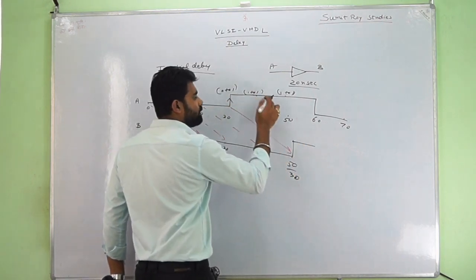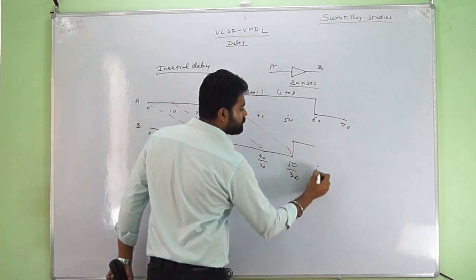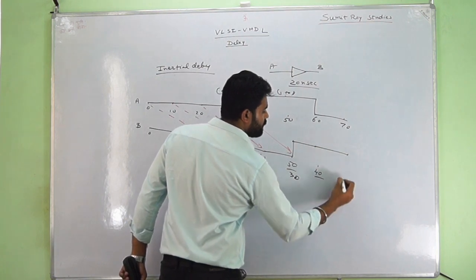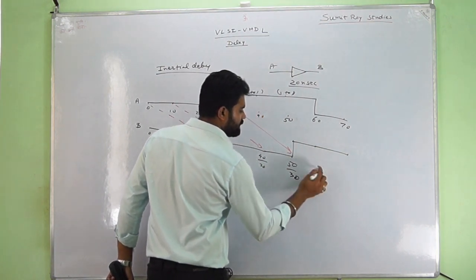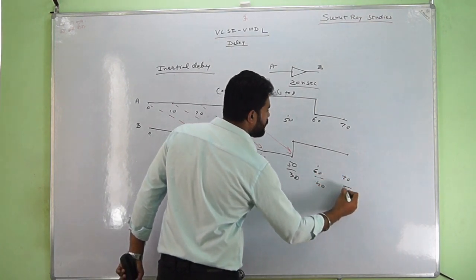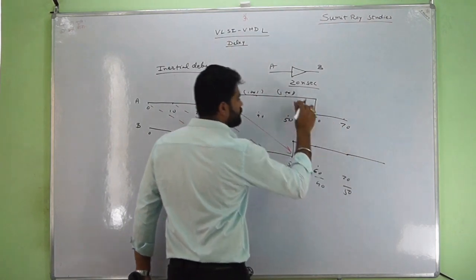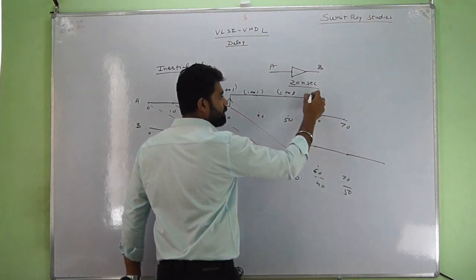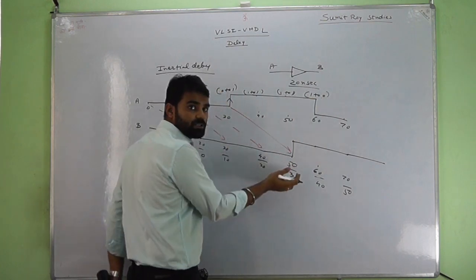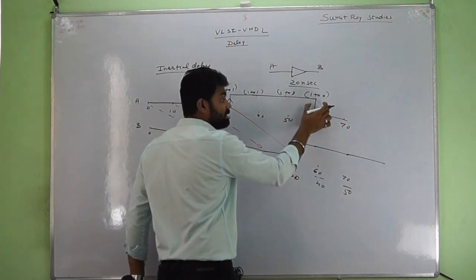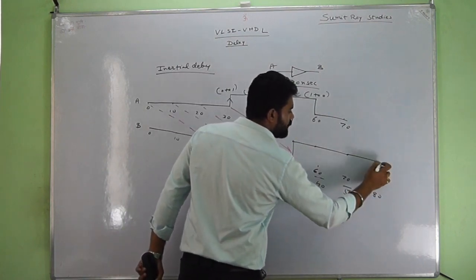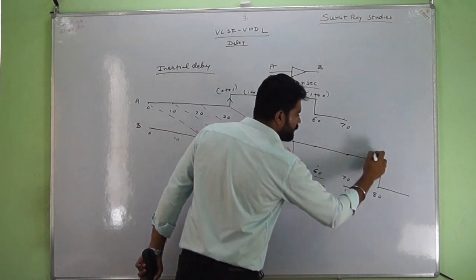And again, this will be at 40, this will be at 50, this is actually 60 of 40, this will be 70 of 50. Then another event has occurred here — 1 to 0 — at 60. The first event has already been executed. So now this is only the case for the second event. At 80, the event will again occur — that is 1 to 0.